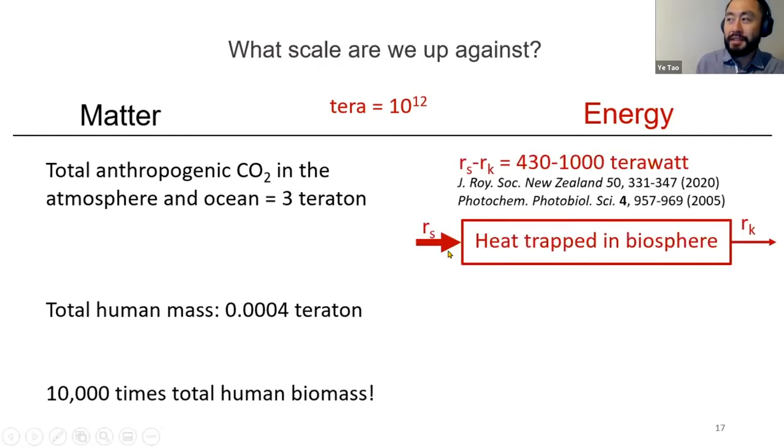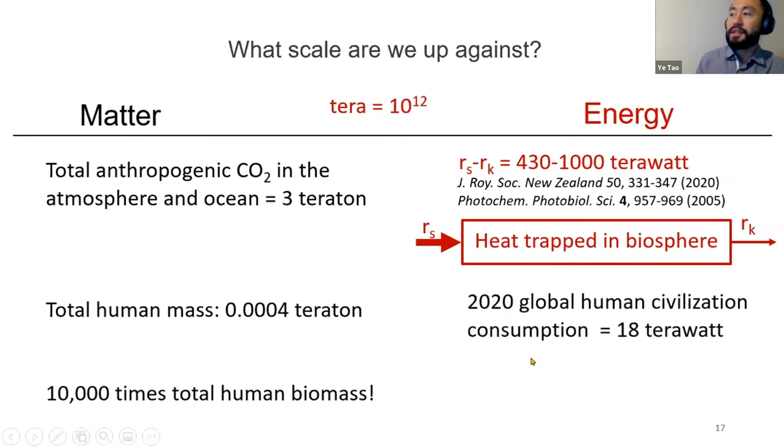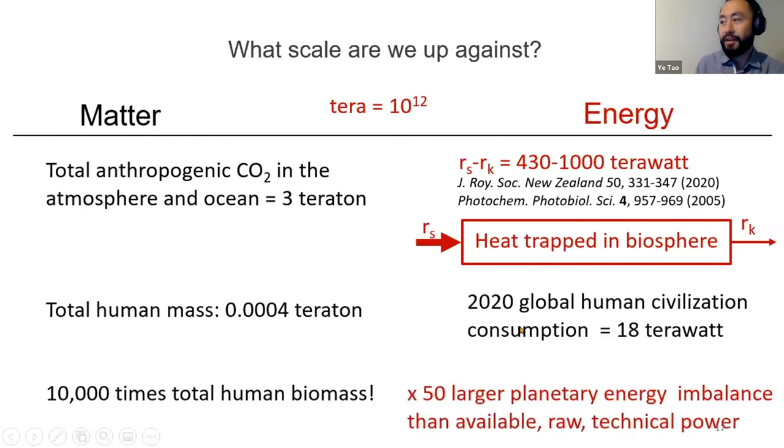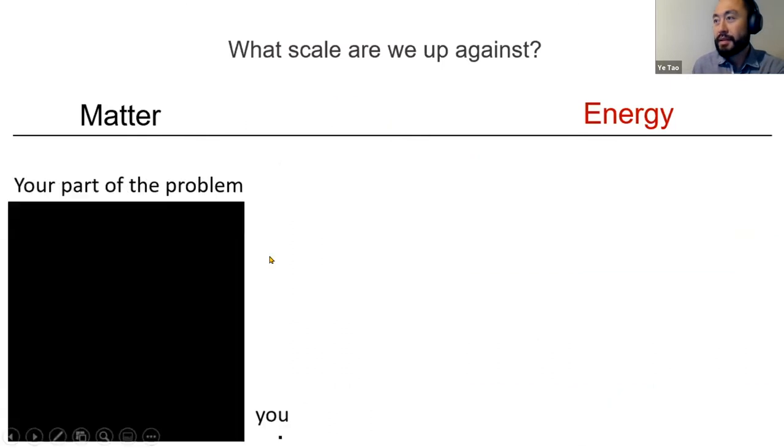In terms of the energy imbalance, essentially the heating power that's currently driving warming, we have a number around 430. But if we were to stop all pollution and lose the cloud-seeding anthropogenic aerosols, then the total energy imbalance can go as high as 1000 terawatts. In comparison, human civilization consumes 18 terawatts, which means the problem that's out there is 50 times larger than the entire technical power available to humans.